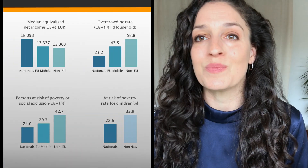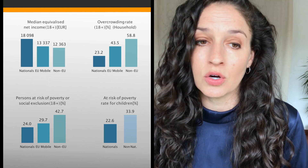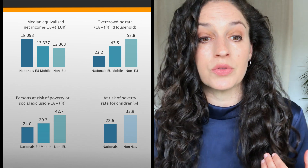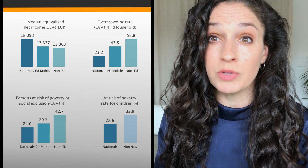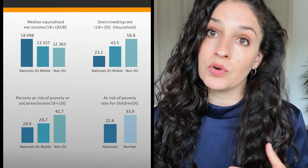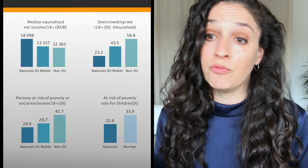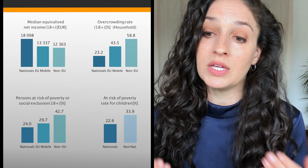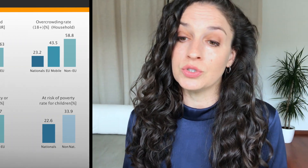Now let's look at some indicators of social inclusion. Looking at median equivalized net income of adults aged 18 and over, nationals have higher income rates than both EU and non-EU immigrants. For overcrowding rates in households, higher overcrowding is seen among EU immigrants and even more so among non-EU immigrants. Looking at the risk of poverty — for both adults and children — immigrants, both EU and non-EU, have higher rates of poverty or social exclusion compared to nationals.